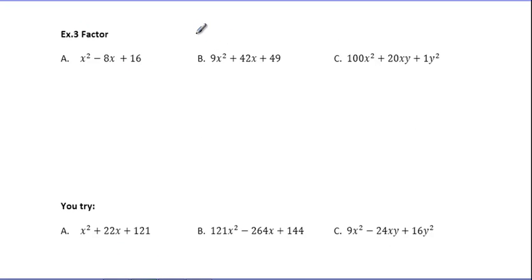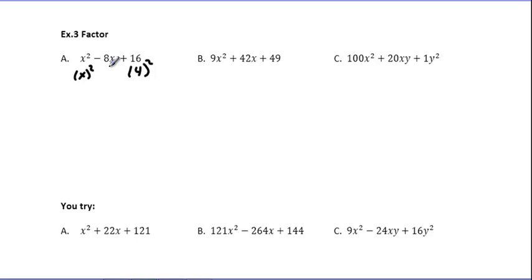Our last three examples deal with Perfect Square Trinomials. Perfect Square Trinomials work pretty much the same way. I check for perfect squares in the first and last positions: this is x getting squared, and that's 4 getting squared. Now I check the middle term by multiplying those square roots together: x times 4 is 4x, then double it to get 8x. That matches, so this is a Perfect Square Trinomial. It's a subtraction problem, so I write it as (x minus 4)².